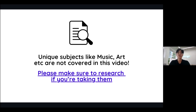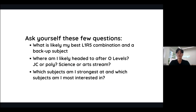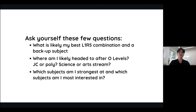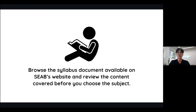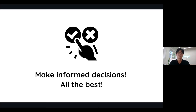So at the end of the day, when you're deciding your subject combination, I want you to ask yourself a few questions. First, what is most likely my best L1R5 combination for my O-levels, plus a backup subject? Next, ask yourself where you're likely headed after O-levels — is it JC or poly? If it's JC, is it the art stream or the science stream? Lastly, which subjects are you currently strongest at and which subjects are you most interested in? If you follow these guiding thoughts, you will likely have a very good sensing of which subject combination will suit you best. Spend some time to browse through the syllabus documents available on SEAB's website and review if the content covered is what you expect it to be. The worst thing that can happen is you randomly choosing a subject combination that backfires on you at O-levels, so please make an informed decision.